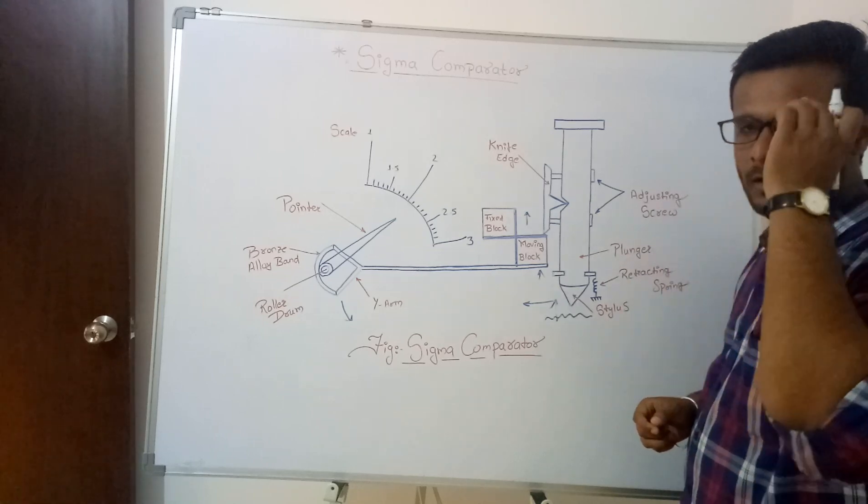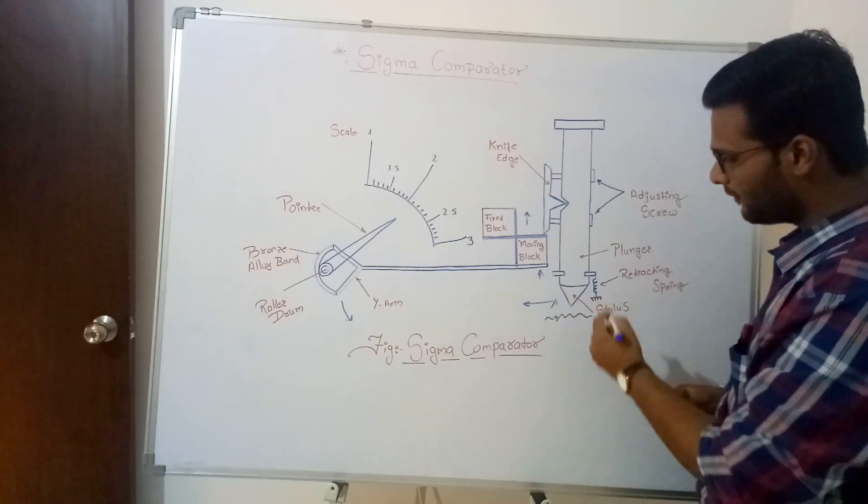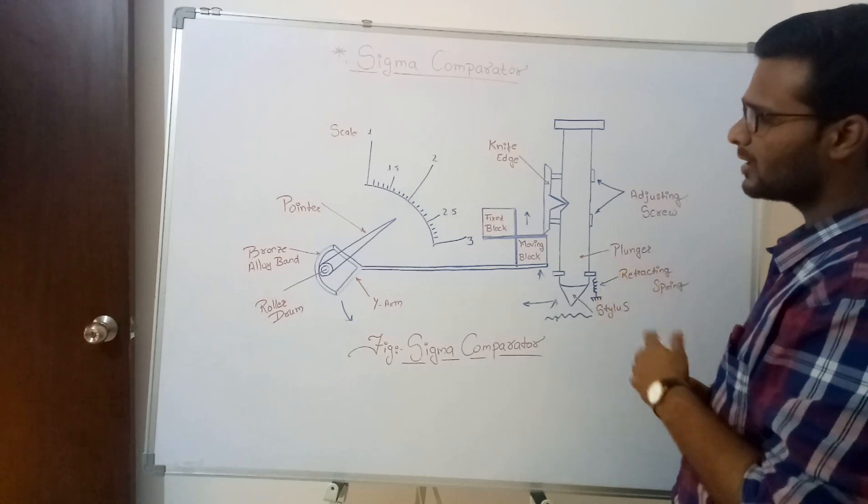So due to this we can compensate or we can know the deflection, linear deflection which is being carried out. This type of comparator is very simple in construction.